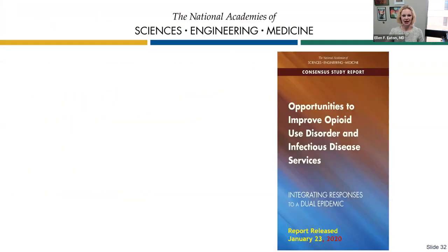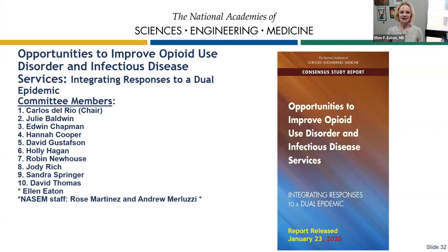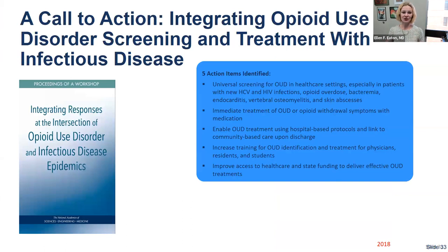Now we're moving to integrating care. These next few slides encourage you to integrate addiction treatment broadly into your routine clinical practice. This is a white paper from the National Academy of Medicine on how to improve opioid use disorder and infectious disease services in both hospital and community settings. Action items identified include: universal screening, rapid treatment of opioid use disorder, hospital-based protocols to catch patients at that vulnerable moment and link them to community care, increasing training, and improving access to healthcare — especially challenging in states that haven't expanded Medicaid.